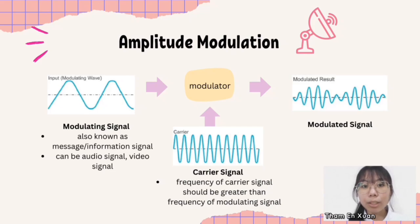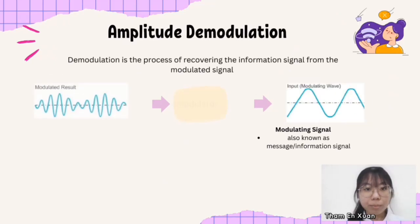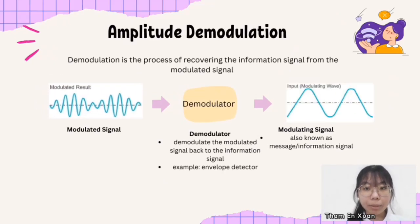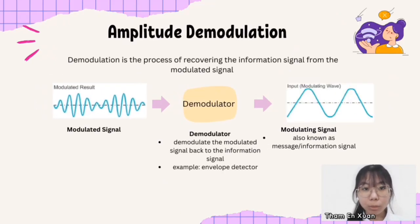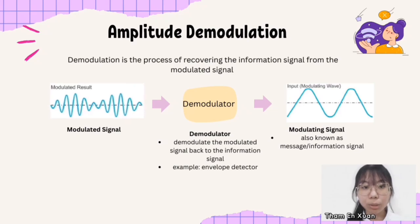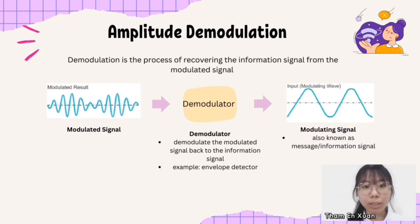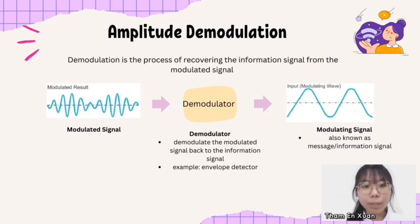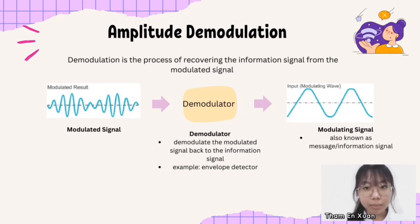In Amplitude Modulation, the Modulating Signal and Carrier Signal pass through a modulator, and the final output is a modulated signal. A modulated signal can be converted back to the original information signal through a process known as demodulation. In the demodulation process, a modulated signal enters a demodulator that demodulates it back to the information signal.